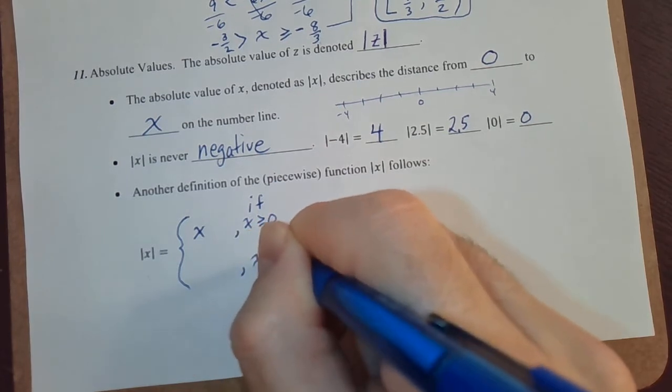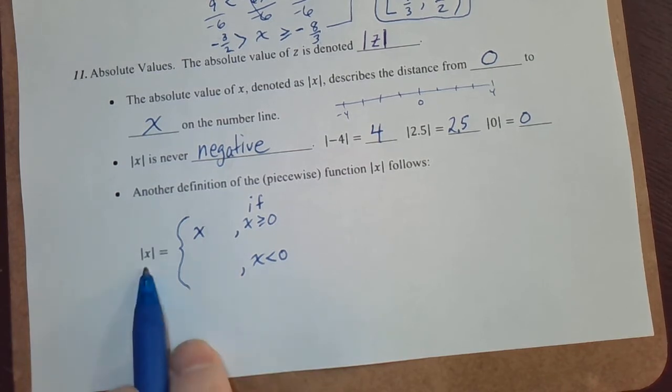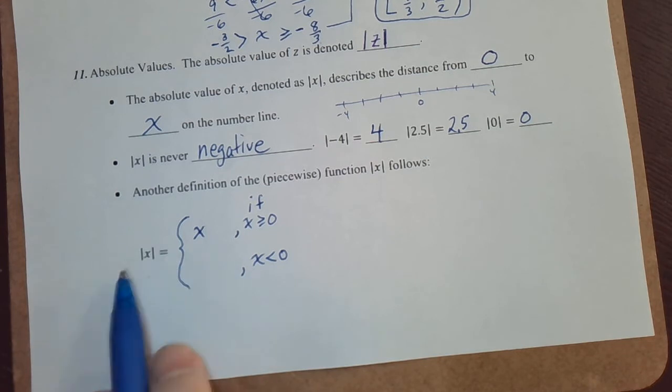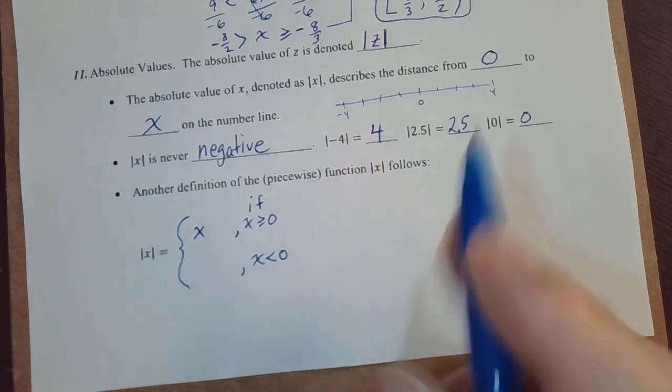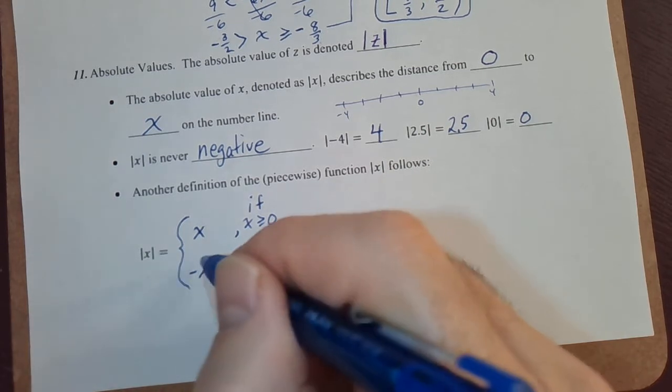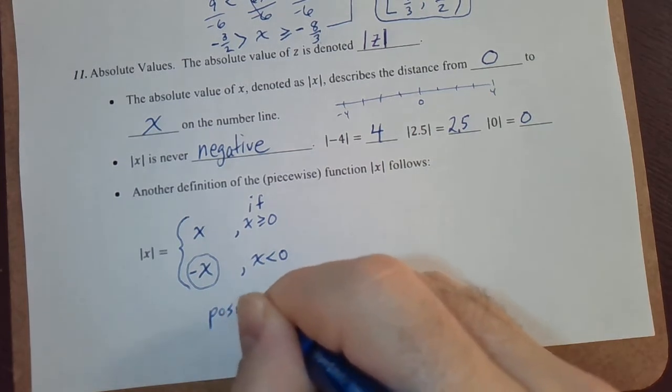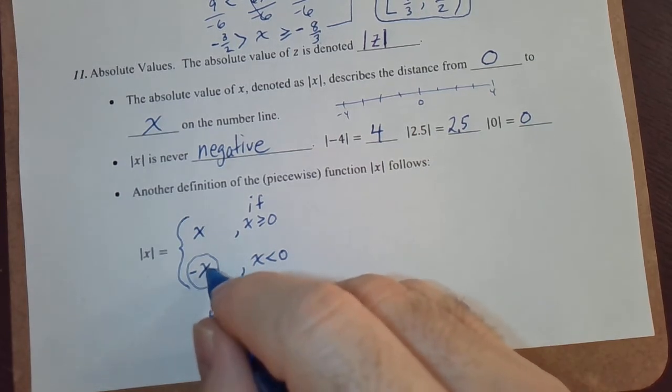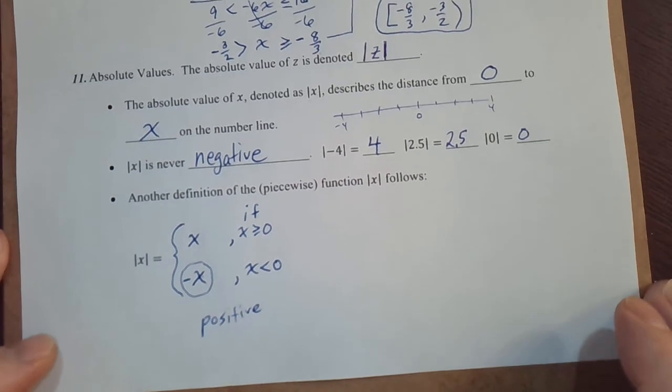How about if x is less than 0, what do I put here? I can't use absolute value of x because we're defining it, I can't use it in the definition. So what do I do to negative 4 to get a positive 4? I multiply it by negative 1. So negative x. And I know some students say it's impossible, absolute value can't be negative. This is not negative, that is positive, because x itself is negative. When you put a negative in front of a negative number, it makes it the opposite, it makes it positive.